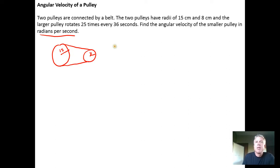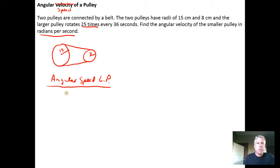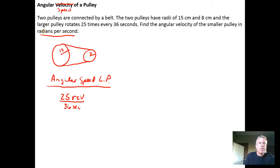We're told the large pulley rotates 25 times every 36 seconds, so it's really more of an angular speed since we're not told whether it's rotating clockwise or counterclockwise. The angular speed of the large pulley is 25 revolutions per 36 seconds. We can take this information and convert it into an angular speed.